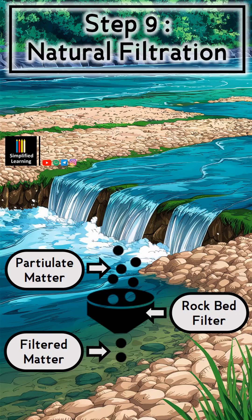The next step is natural filtration. As water flows through gravel beds, sand, and other porous materials in the riverbed, it undergoes natural filtration. This process physically removes particulate matter and can help reduce the concentration of certain pollutants, similar to how artificial filters work.